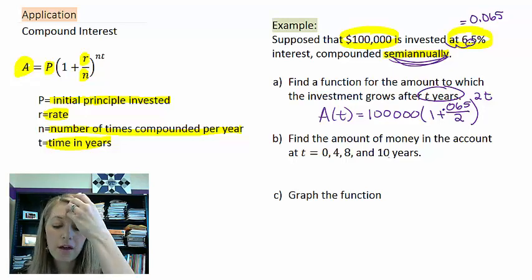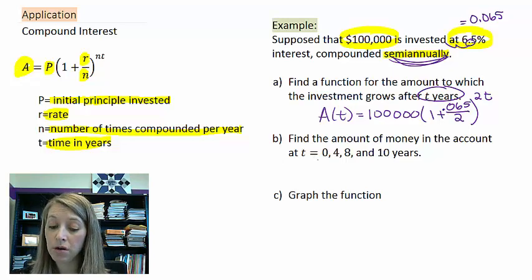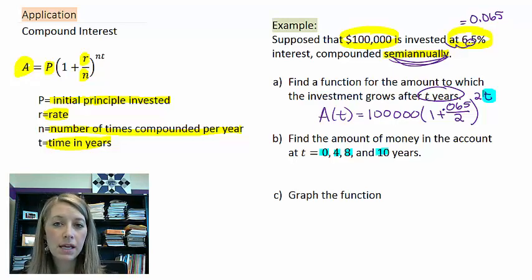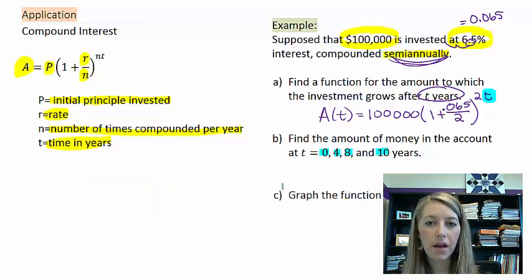We want to find the amount of money in the account after zero years, four years, eight years, and ten years. So basically that means all we need to do is plug in each of these numbers respectively into my equation. So since we have this equation set up, I suggest that you pause the video and plug in each of these numbers on your own and see what values you get out, and then take those values and graph them on a function.